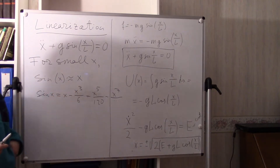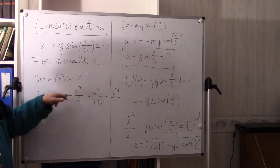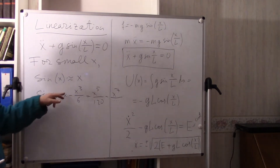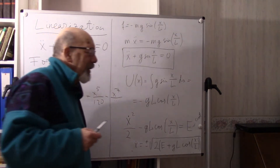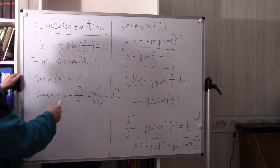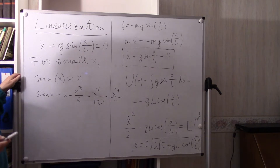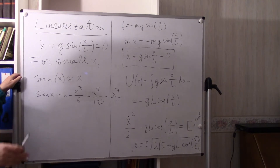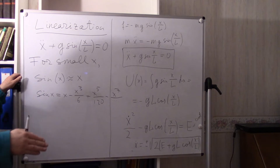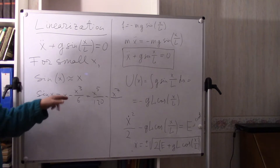If X is less than 0.01, then X cubed divided by 6 will be less than 10 to the minus 6, and higher terms will be less than X to the minus 10. So practically only the first term remains. For any reasonable margin of accuracy, we can replace sine(X) by X if X is small enough that the error is within that margin.